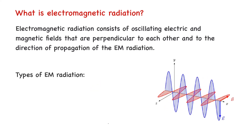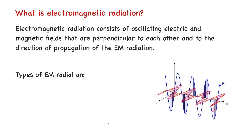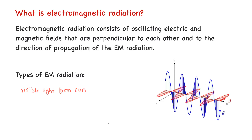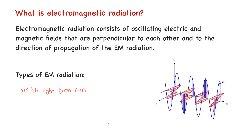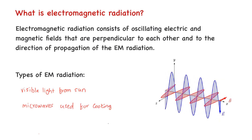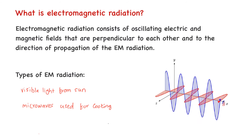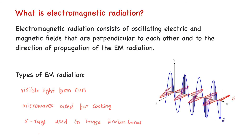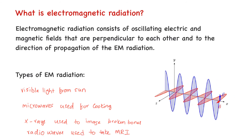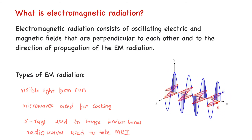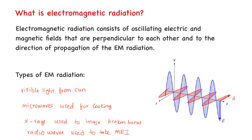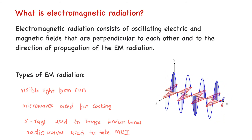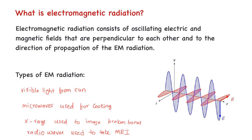There are different types of electromagnetic radiation. Visible light emitted from the sun is a form of electromagnetic radiation. Microwaves that we use to cook food, x-rays that are used to image a broken bone, and radio waves that are used to take a magnetic resonance image of a body organ are all different types of electromagnetic radiation.